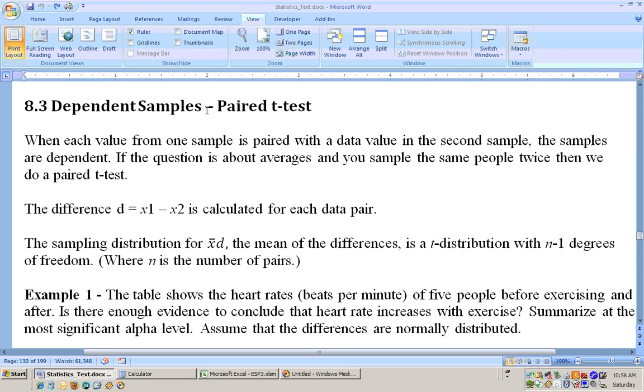This is section 8.3 on dependent samples. It's called a paired t-test, and this is when you sample people before and after. You sample the same people twice, and you're concerned about their means, their averages. So if you're concerned about averages and you sample the same people twice, you're running what's called a paired t-test. And when you sample the same people twice, that's called a dependent sample.